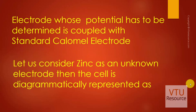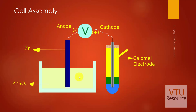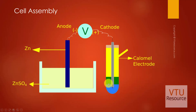The unknown electrode whose potential has to be determined is coupled with the standard Calomel electrode. Let us consider zinc as the unknown electrode. This cell is diagrammatically represented with zinc dipped in zinc sulfate, connected to the voltmeter, and the Calomel electrode also connected to the voltmeter.